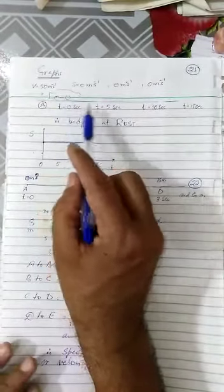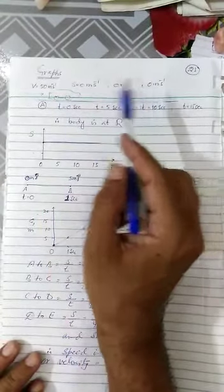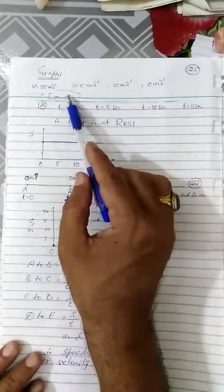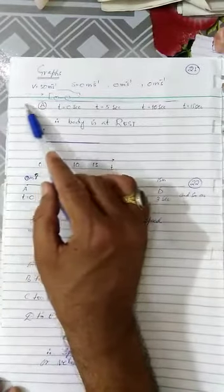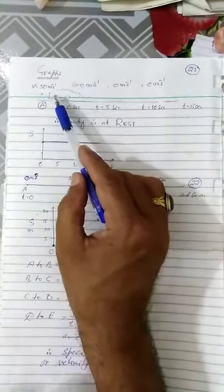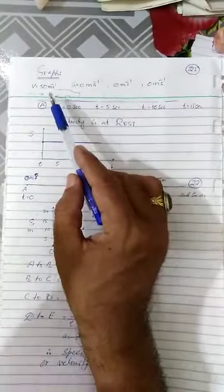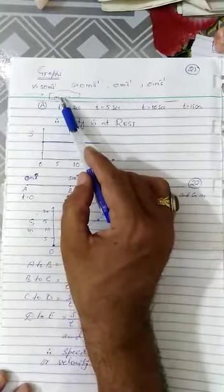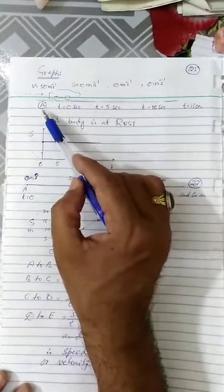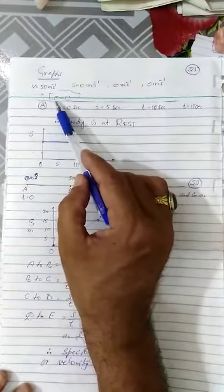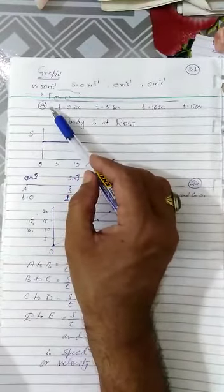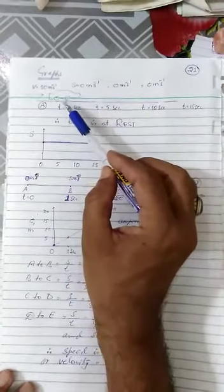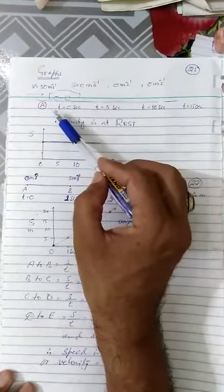So car is coming from this left hand side and moving towards right hand side. But the situation is when car is coming from this left hand side, it means now car has covered some distance from left side. But as the car reaches at point A then it stops there.